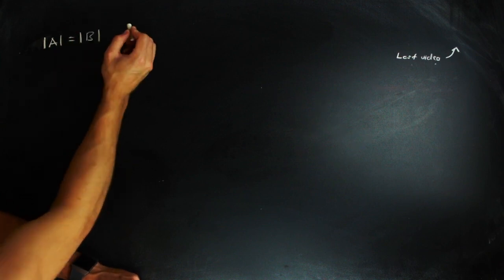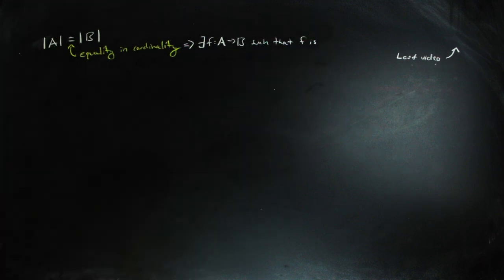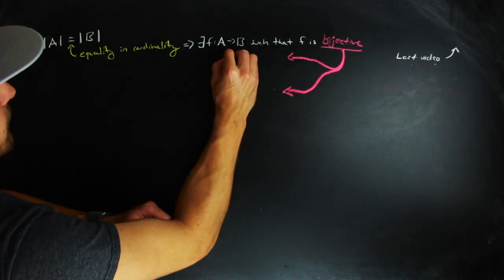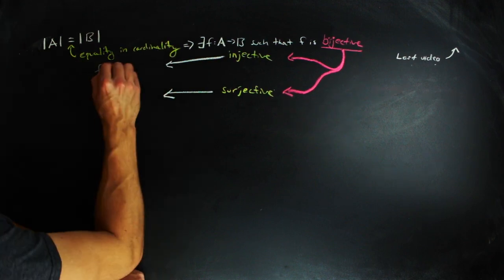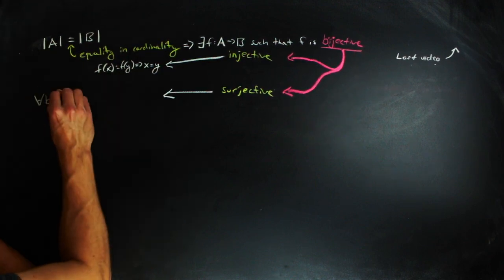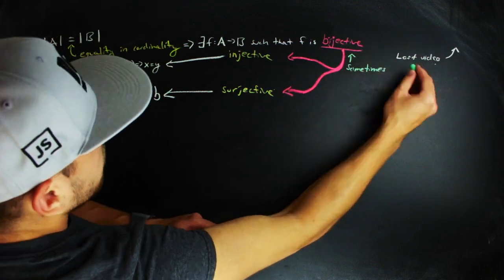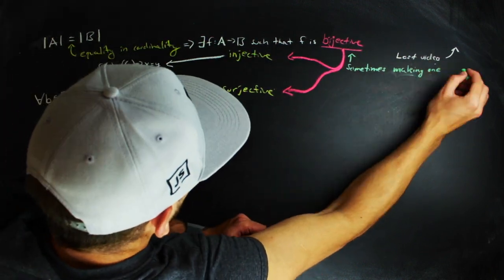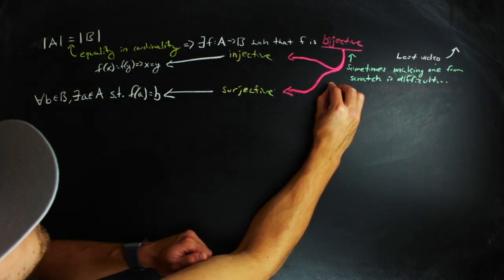When we were talking about equating the cardinality of two sets, we talked about it being done with bijections, or functions that are both injective and surjective. In other words, each domain element hits a unique target and everything in the target is hit. Sometimes though, it can be kind of difficult to just look at two sets and construct a bijection between them to show that they have the same cardinality.